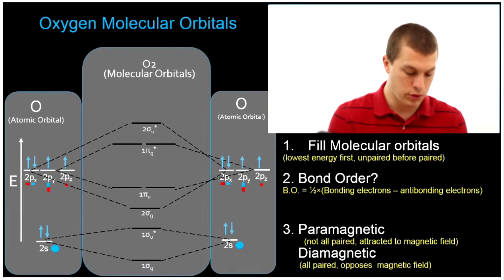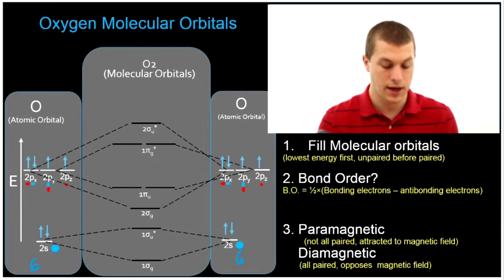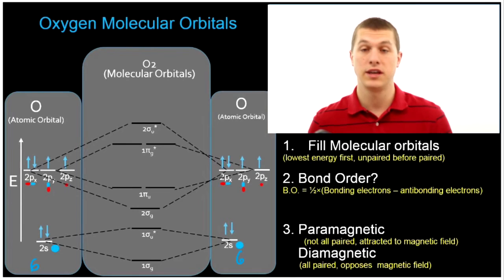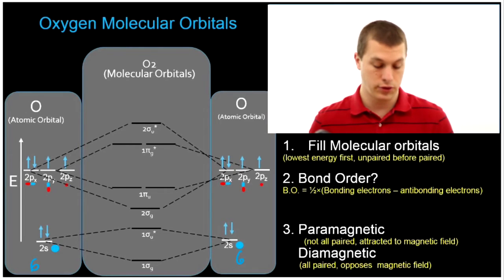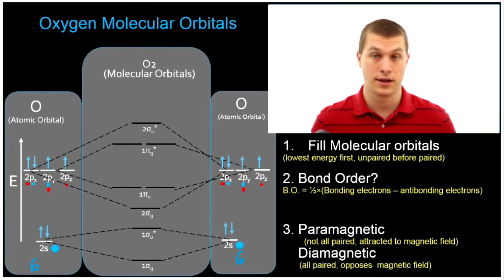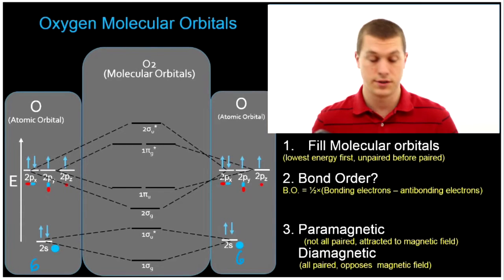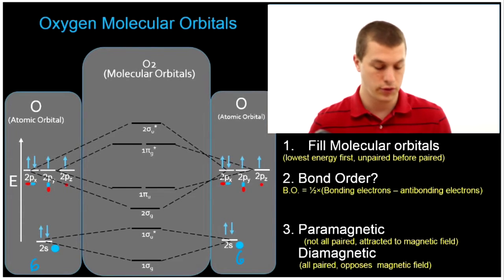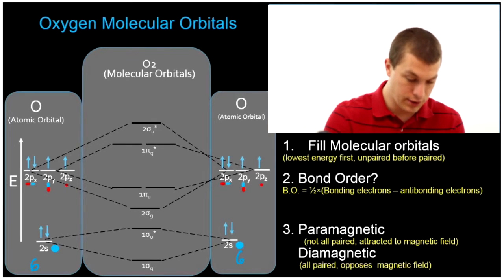Let's fill in our molecular orbital diagram. For oxygen, we have a total of six electrons on each side. We're only thinking about the valence electrons here — there are of course 1s electrons that just don't contribute to the molecular orbitals. Oxygen has eight electrons total, but we only consider six because two of them are core electrons, not valence electrons, and don't contribute to our molecular orbital. So we have six and six electrons, meaning we're going to fill in a total of twelve.